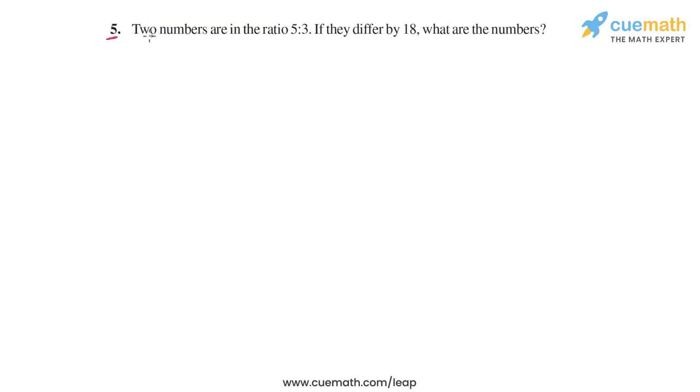In question 5, the problem statement says that two numbers are in the ratio 5 is to 3. If they differ by 18, what are the numbers? So two numbers are in the ratio 5 is to 3.